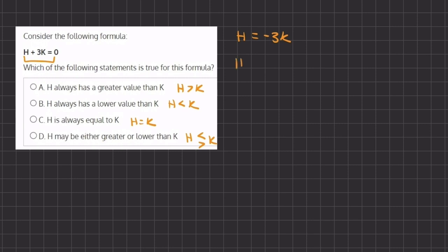So let's choose a positive value for H and a negative value. We can choose a positive 3 and a negative 3. Alright, so when H equals a positive 3, let's plug that in. We have 3 equals negative 3 times K. And we can divide negative 3 on both sides. So we have negative 1 equals K. So in this case, when H equals positive 3, H is greater than negative 1, which is K. So in this statement, H is greater than K. And that means that we can cancel out B and C.